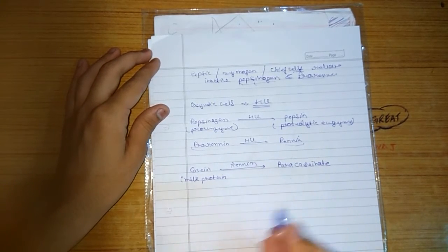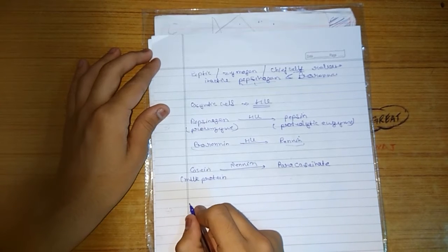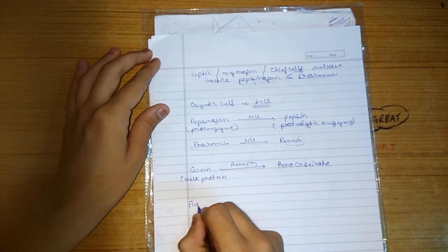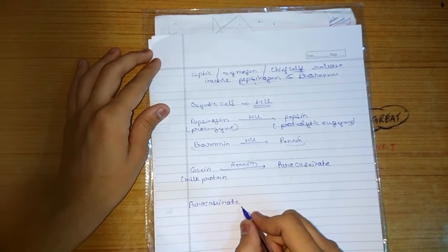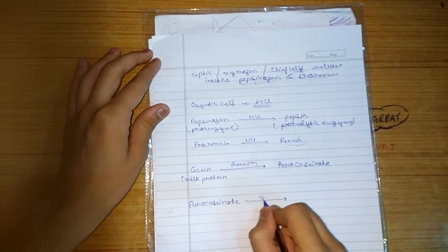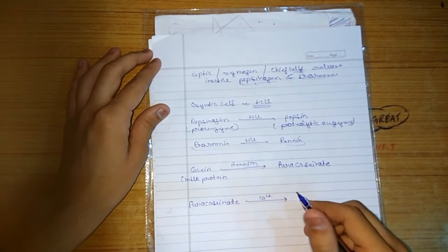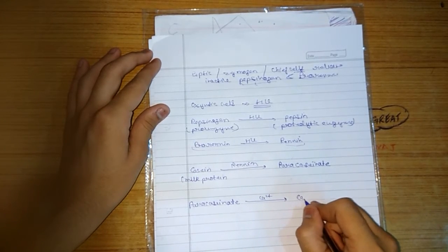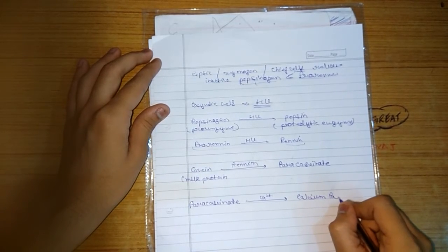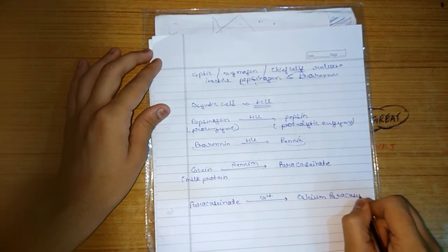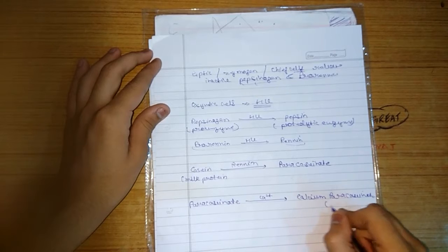And in the presence of calcium, the paracaseinate is converted into calcium paracaseinate. Calcium paracaseinate, this is an insoluble form.